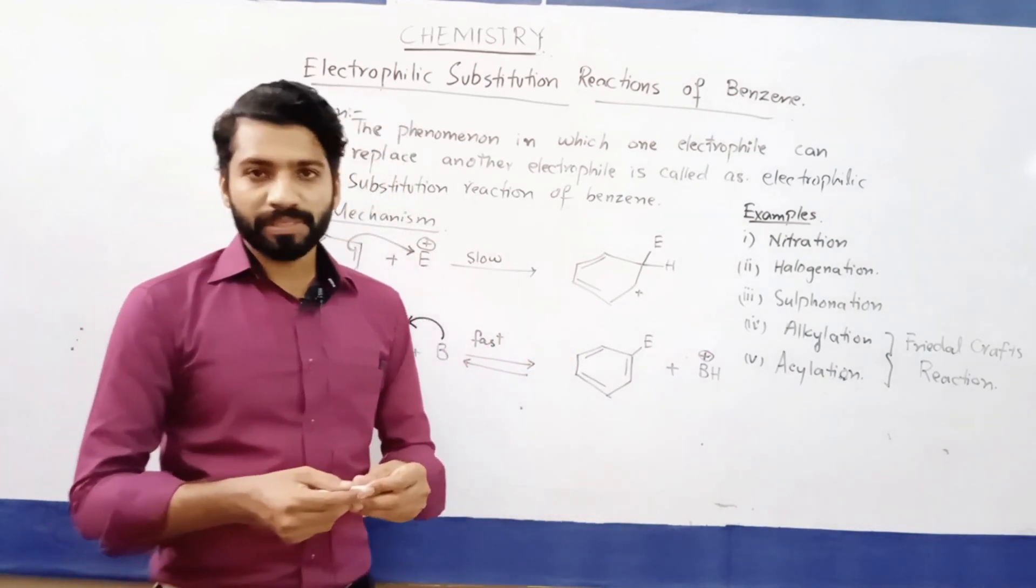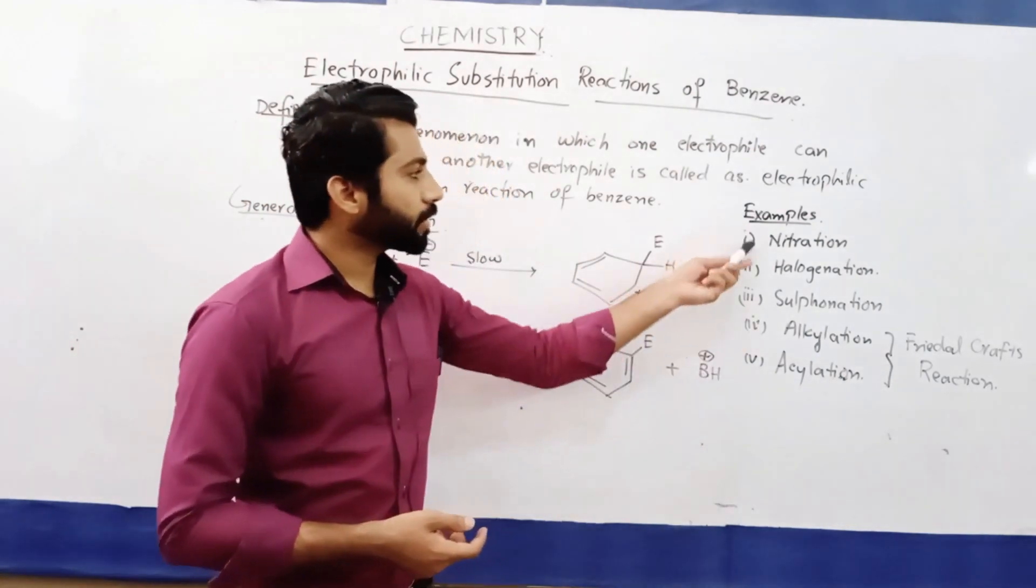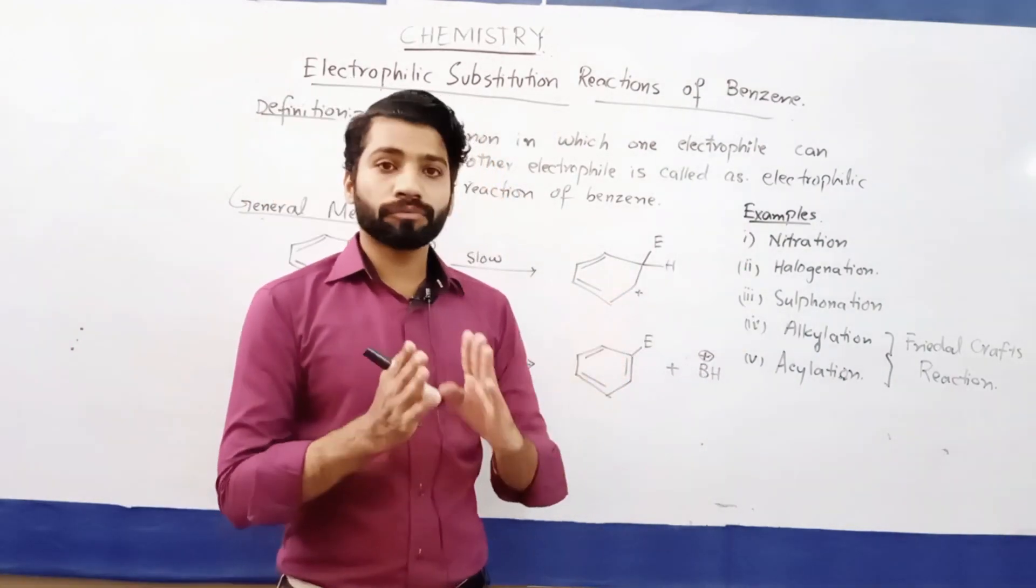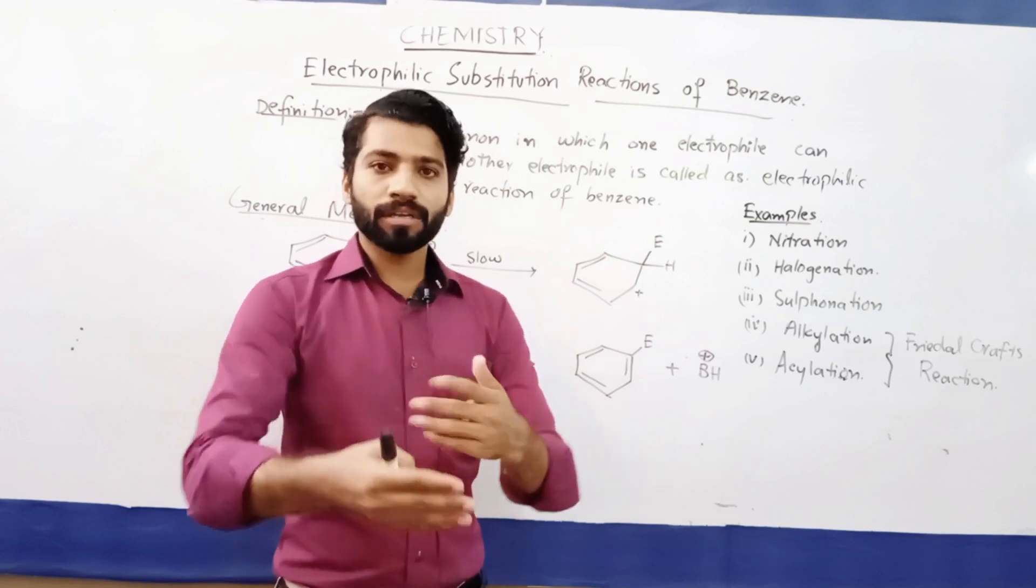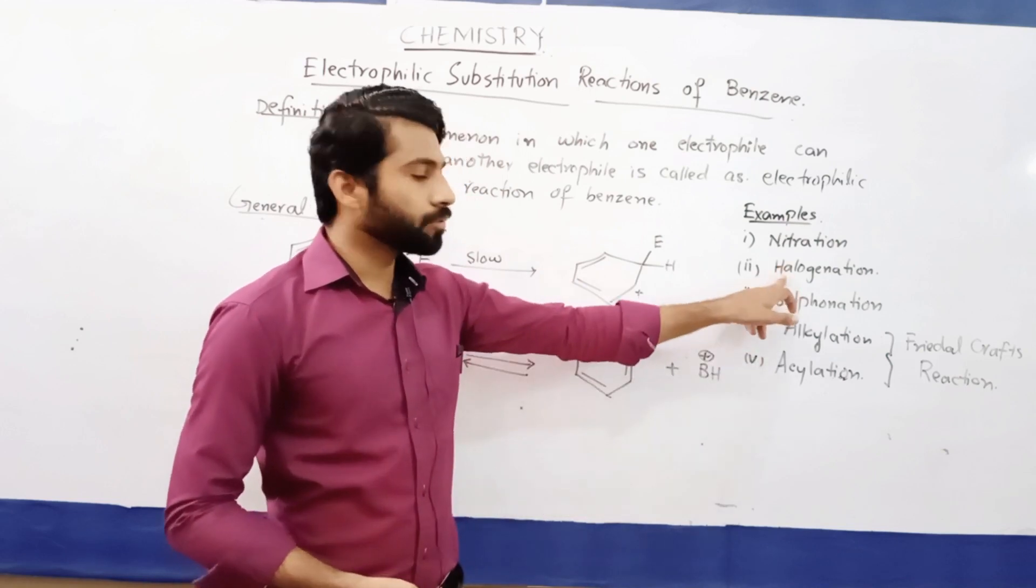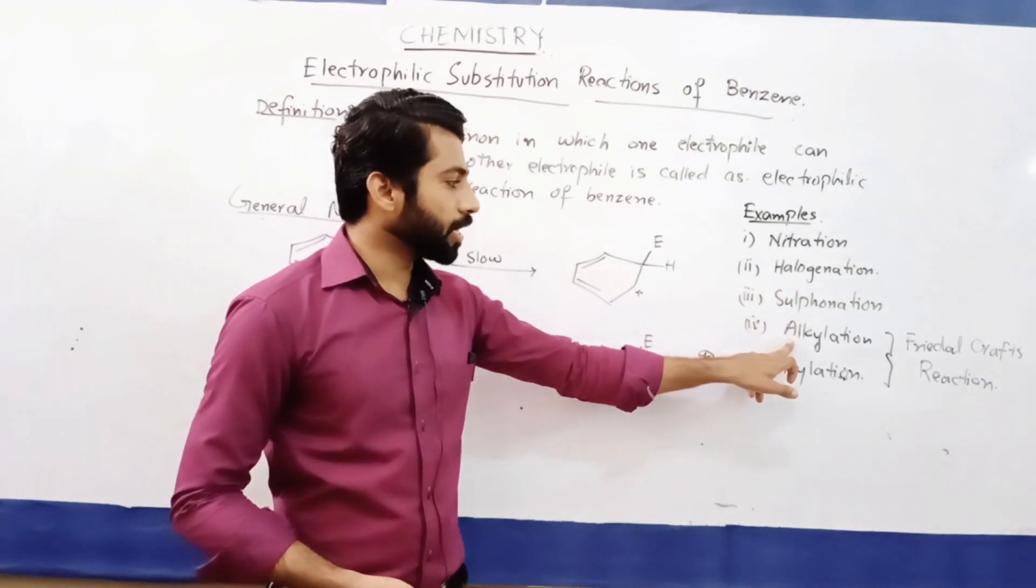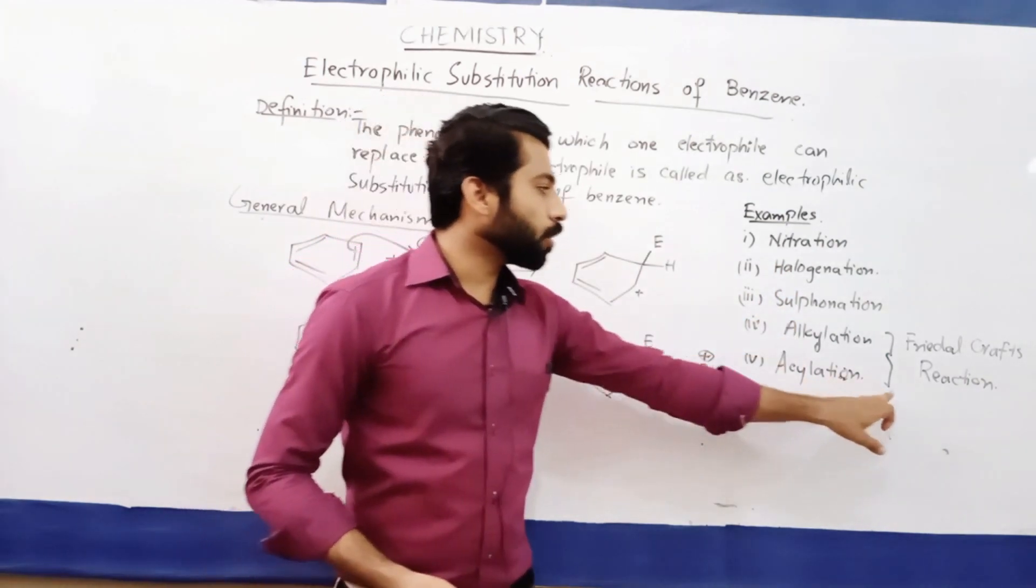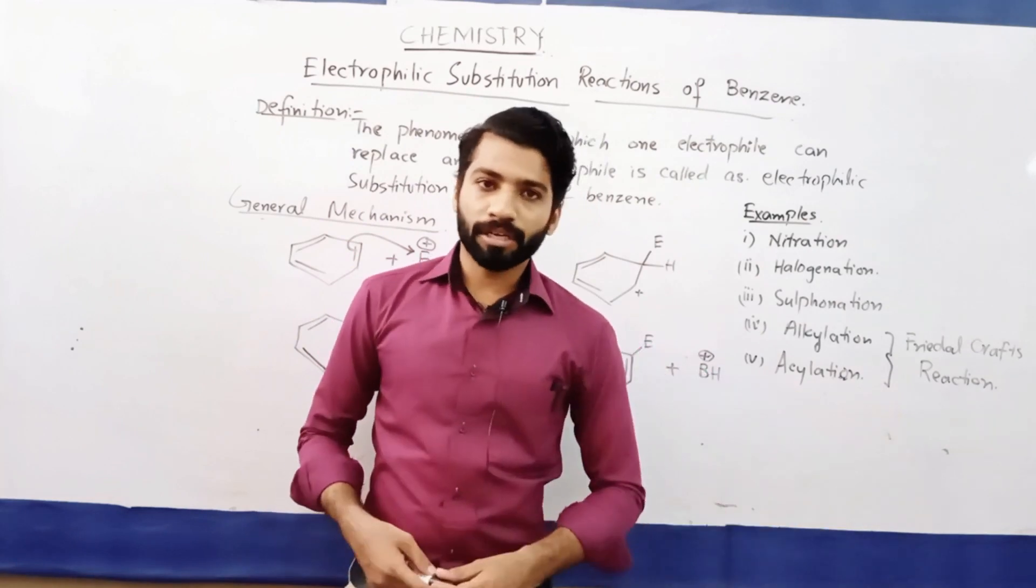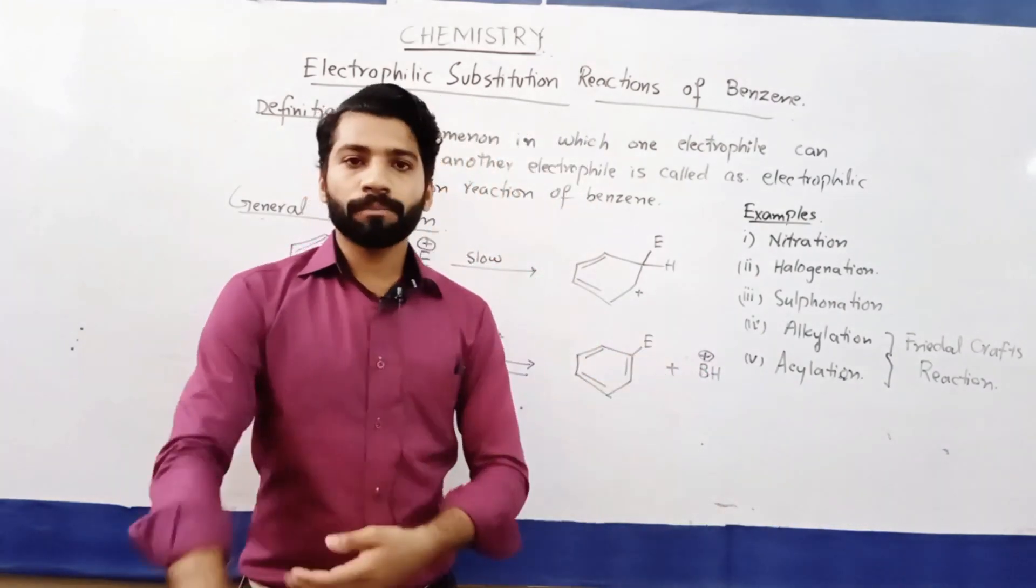There are a lot of examples which we will discuss, such as nitration, substitution of nitro group to the benzene ring. We will discuss halogenation, sulfonation, alkylation and acylation. Alkylation and acylation are also known by a common name, which we call Friedel-Crafts reactions. These are all examples which we will discuss in the coming videos.